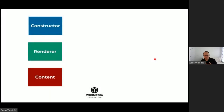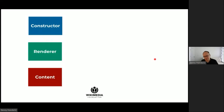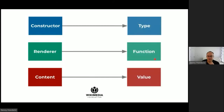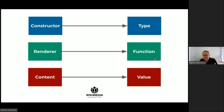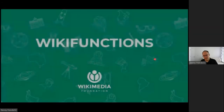One reason Wikipedia was such a big success was that everyone understands what an encyclopedia is. But if you want to make a collaborative system about constructors and renderers, that sounds much harder. However, if we squint a little, constructors look like types in programming languages, renderers look like functions, and content is the values of those types. Suddenly we have a project with a far larger scope and a far larger potential community. That's Wikifunctions — what we're working on right now.